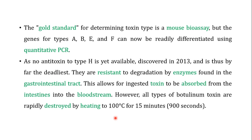The gold standard for determining the toxin type is a mouse bioassay using monoclonal antibodies that identify which kind of toxin is produced by which strain of Clostridium botulinum. However, the genes for types A, B, E, and F can now be readily differentiated using quantitative PCR.